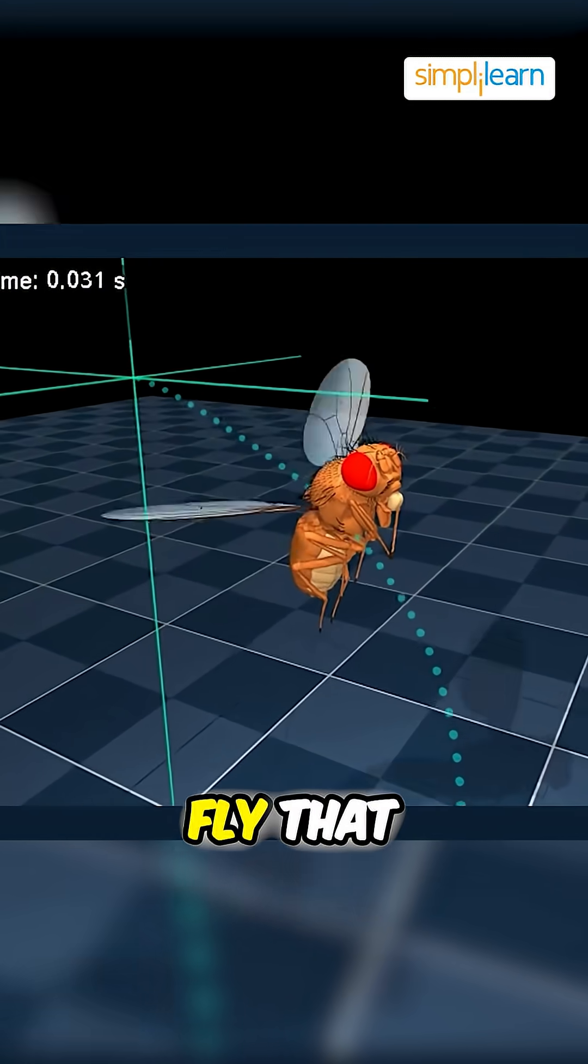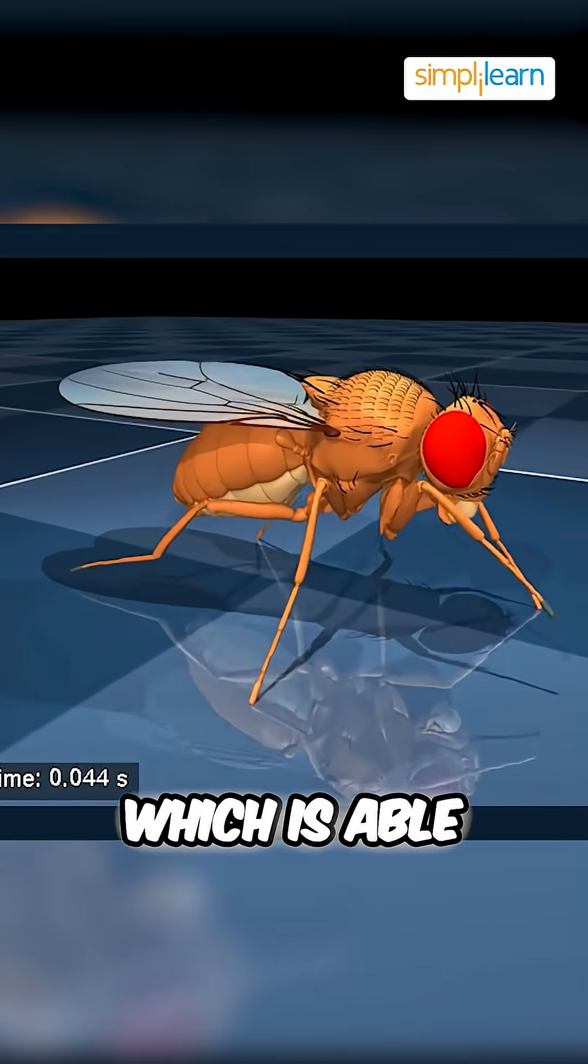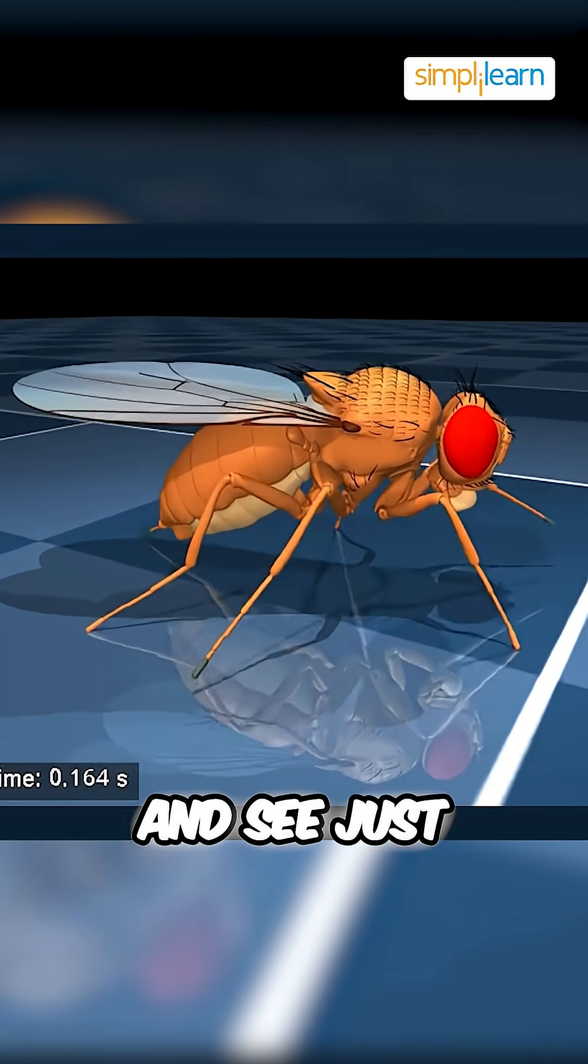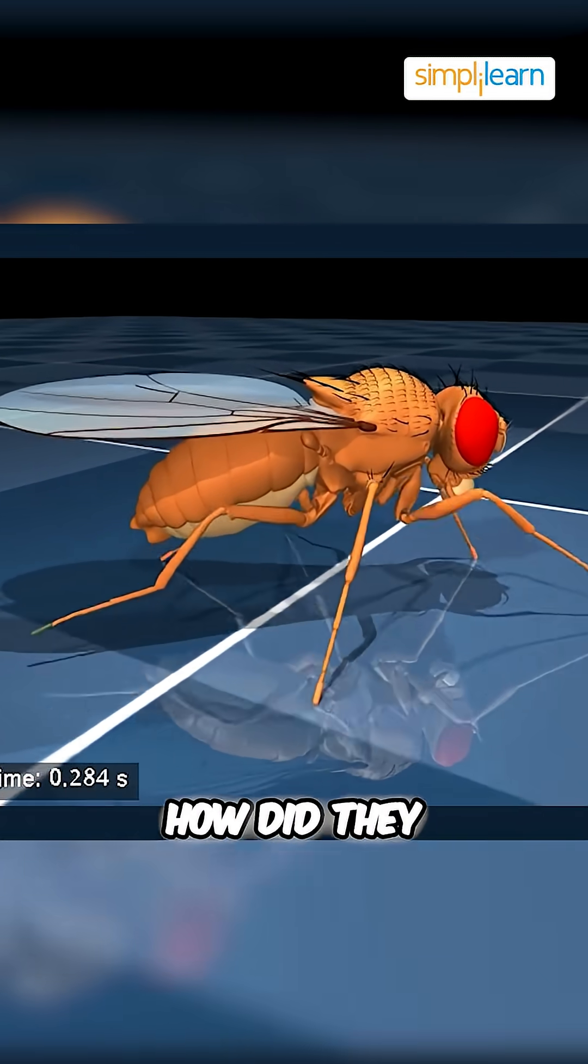Google has created a digital fruit fly that lives inside your computer which is able to walk, fly, and see just like a real thing. But the question is, how did they do it?